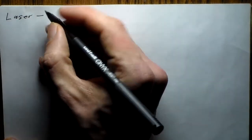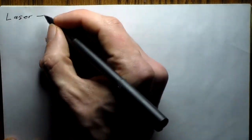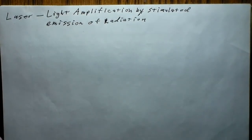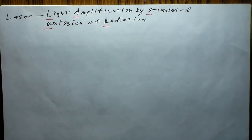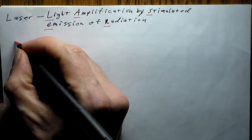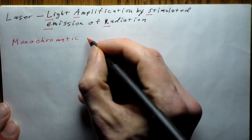Next we'll describe three light sources: lasers, monochromatic light, and white light. A laser is an acronym for Light Amplification by Stimulated Emission of Radiation. What makes a laser special is first that it is monochromatic light, and second that it is coherent.